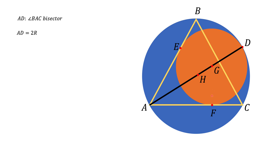Now let's connect point G and point F. This is the radius of the small circle. Since AC is tangent to the small circle and F is the point of tangency, GF is at 90 degrees to AC. Since AD is a bisector of angle A, and angle A in equilateral triangle ABC is 60 degrees, angle GAC is half of 60 degrees, which is 30 degrees. Looking at triangle AGF, one angle is 30 degrees, another is 90 degrees, so the third must be 60 degrees — this is a 30-60-90 triangle.